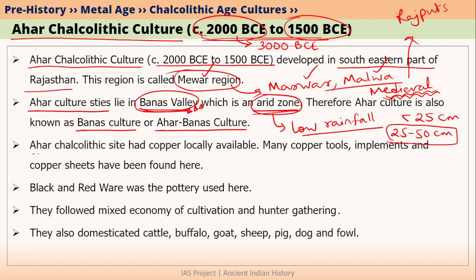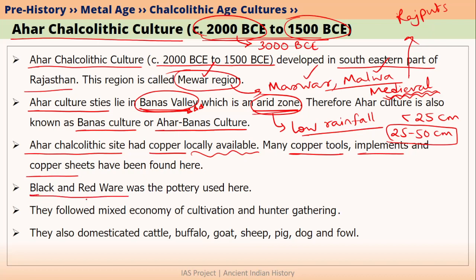Ahar Chalcolithic sites had copper which was locally available. That is why these people were able to make many copper tools, copper implements, and copper sheets, most of which have been found. These people mainly made black and red ware pottery.